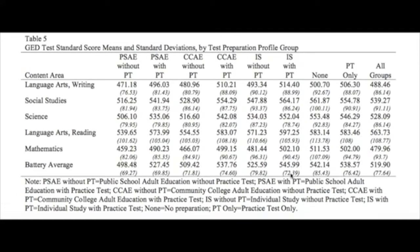In a study with over 90,000 people grouped into different categories, the individual study group — those who did their own studying and preparation — scored much better on average on all sections than community college prep class takers and public school adult education class takers.